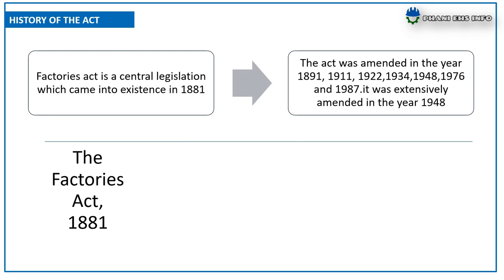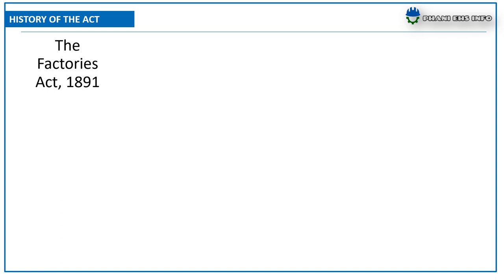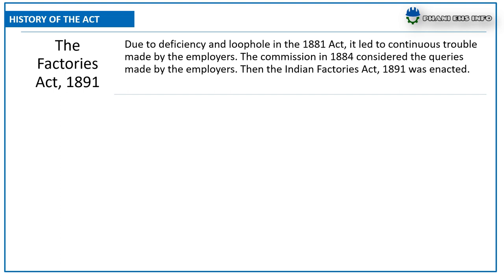The first Indian Factories Act was enacted in 1881. This act mainly focused on the prohibition of employment of children under seven years of age. The 1891 act was made applicable to factories with more than 100 workers and to factories with mechanical power. Due to deficiencies and loopholes in the 1881 act, it led to continuous trouble made by the employers, and a Commission in 1884 considered the queries made by the employers.